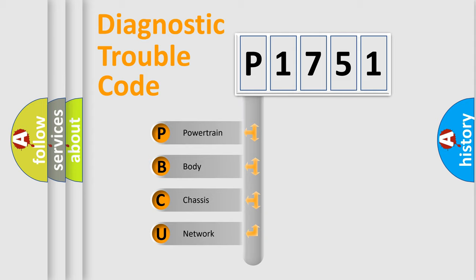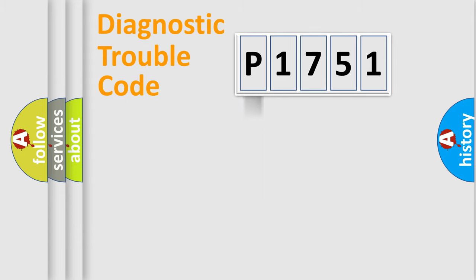We divide the electric system of automobile into four basic units: Powertrain, body, chassis, and network. This distribution is defined in the first character code.